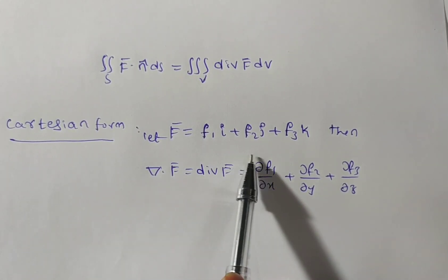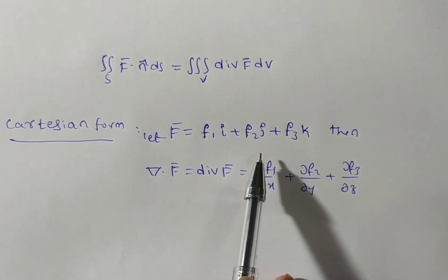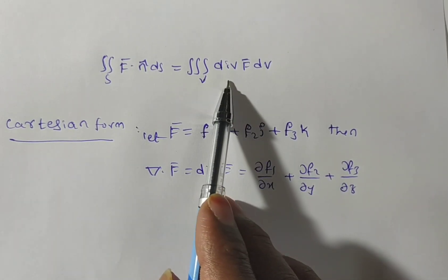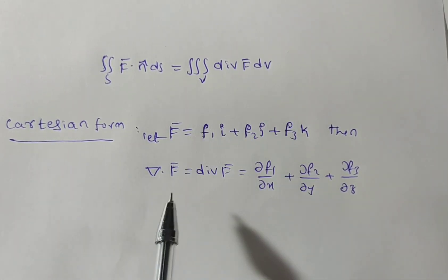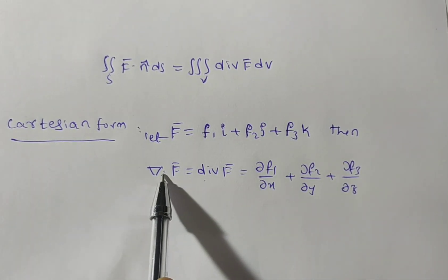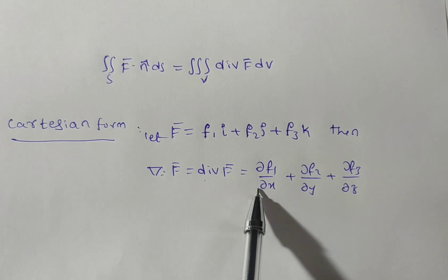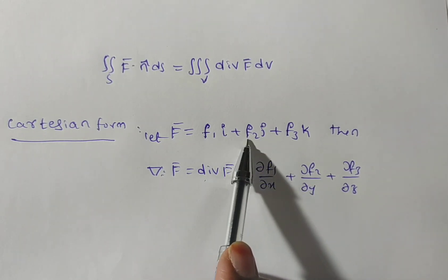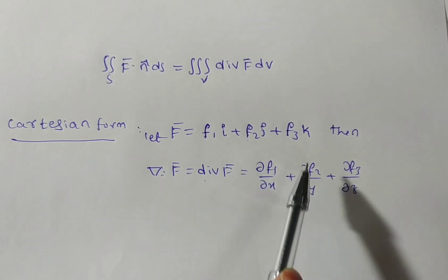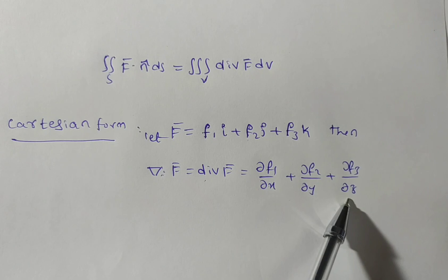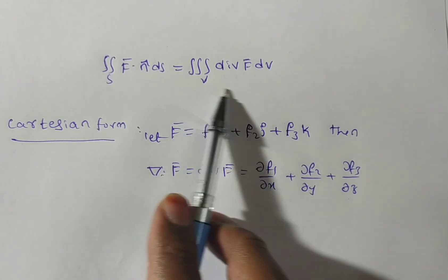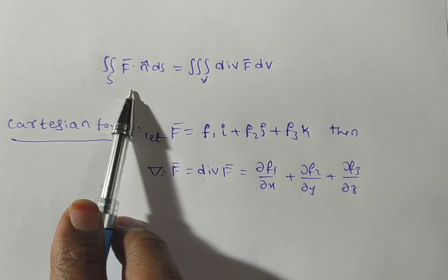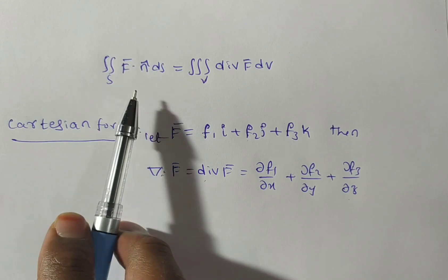Let F-bar equal F1 i plus F2 j plus F3 k. Then the right-hand side, divergence of F-bar, is del dot F-bar, which is a scalar point function: partial F1 by partial x plus partial F2 by partial y plus partial F3 by partial z. The RHS part is clear; now we write the LHS part.